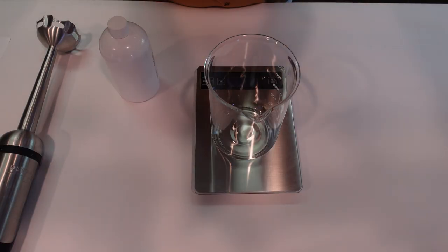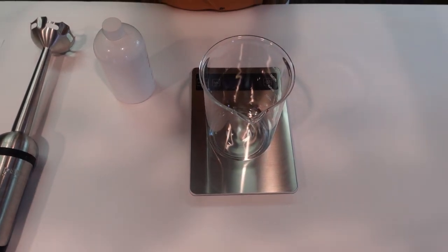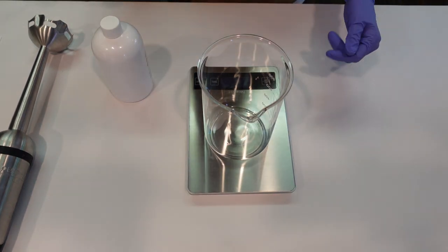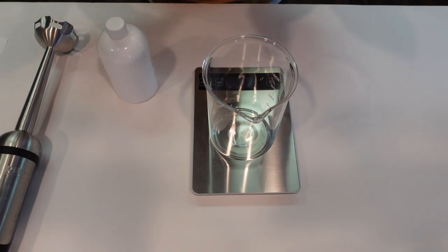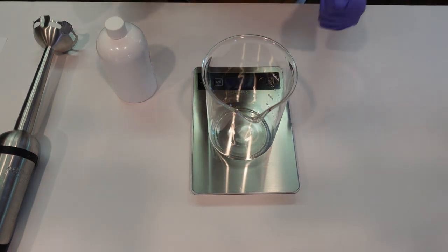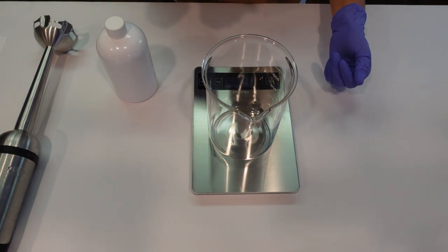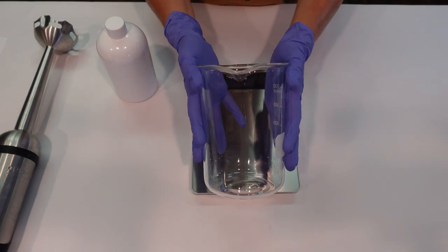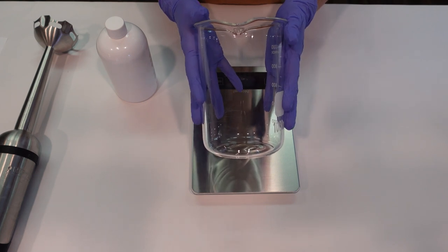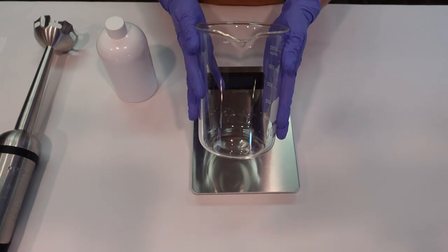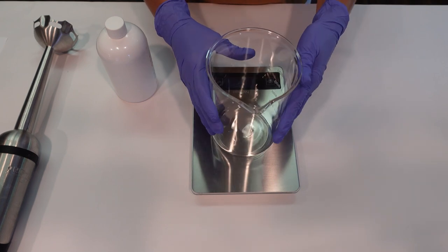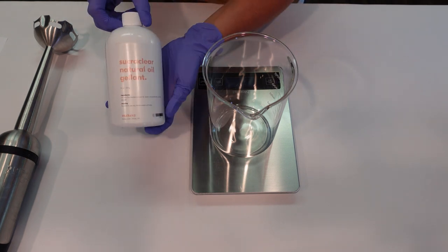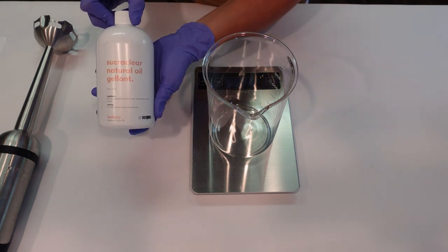This formula consists of four phases: A, B, C, and D. Although that sounds kind of complicated, I assure you once you get your method down on this formula it's pretty easy to put together. The first thing we're going to do is weigh off our Phase A ingredient, and it's only one ingredient. We're going to be putting it into this larger beaker because eventually the whole formula is going to go into this beaker. We're making a 400 gram batch.